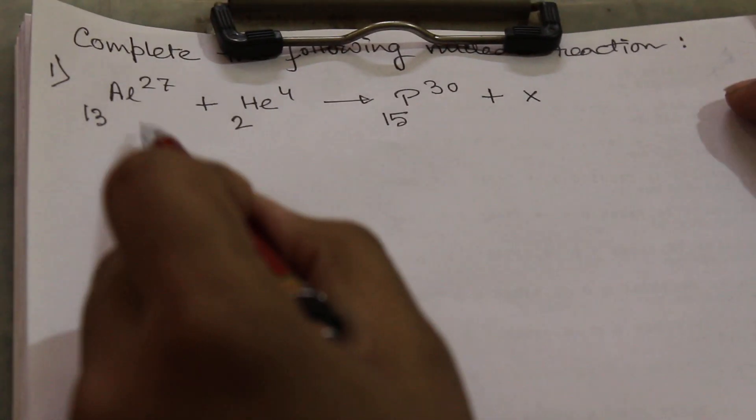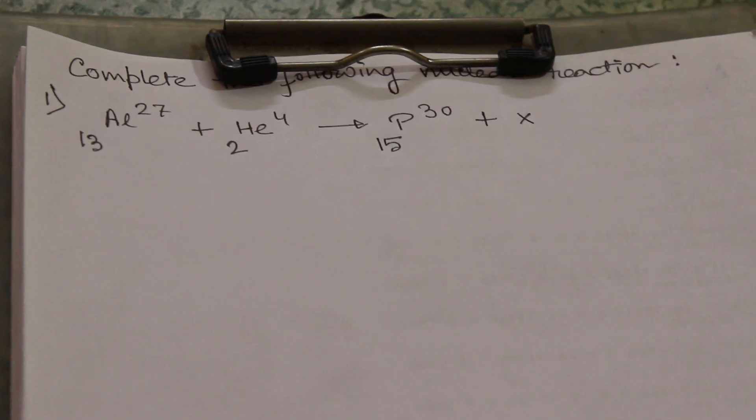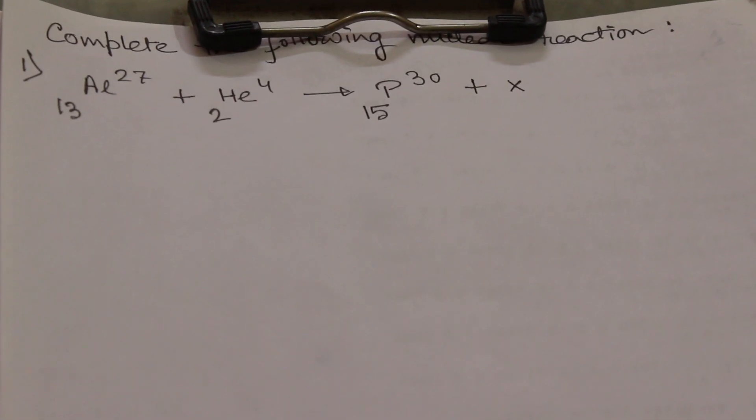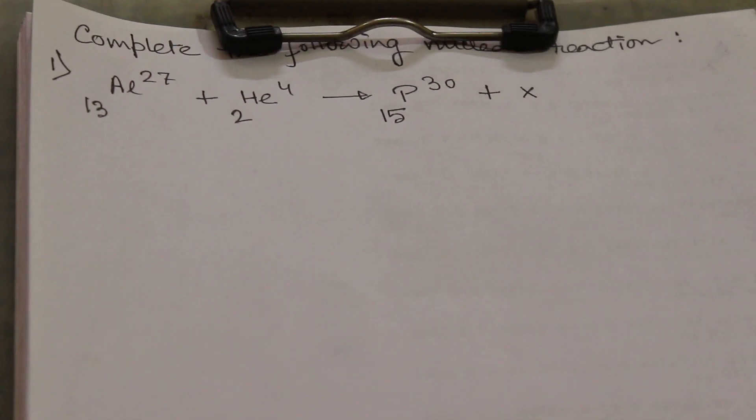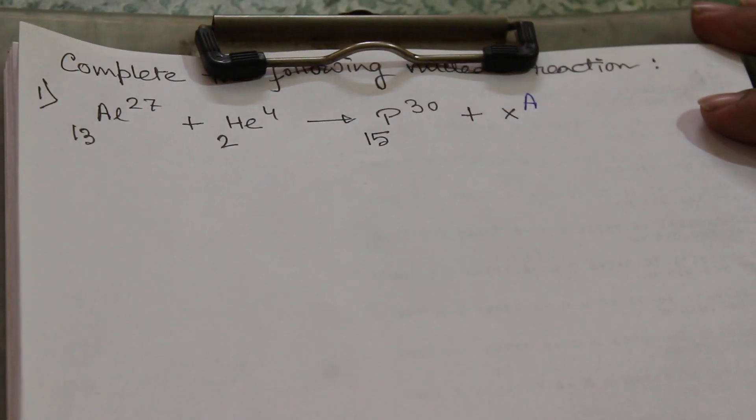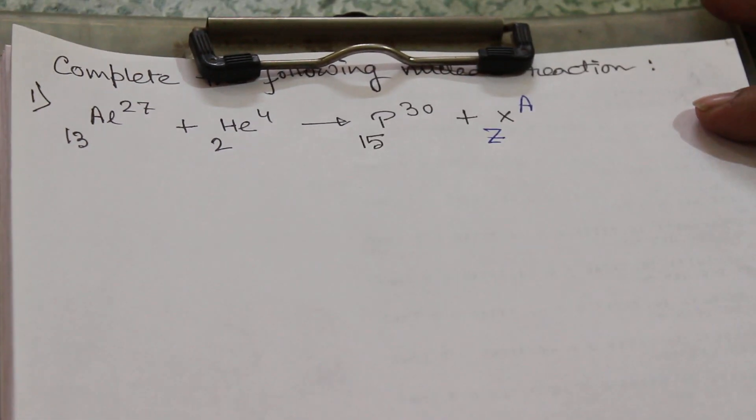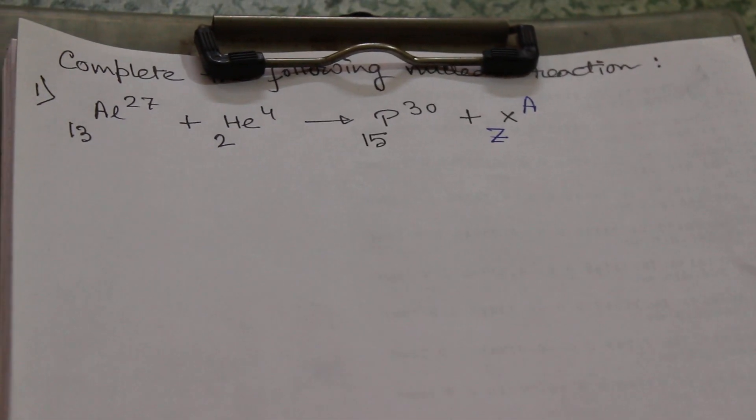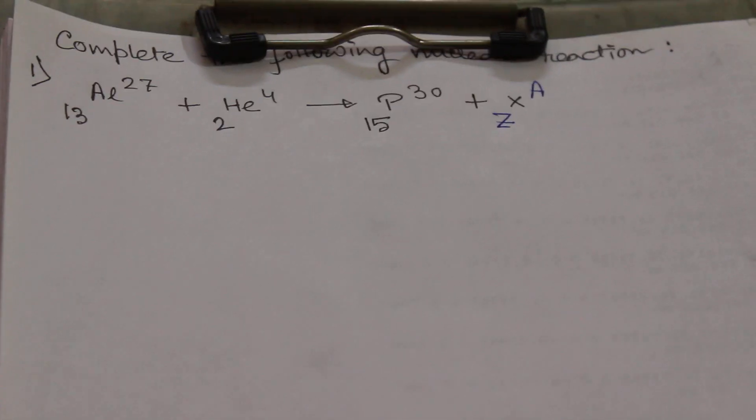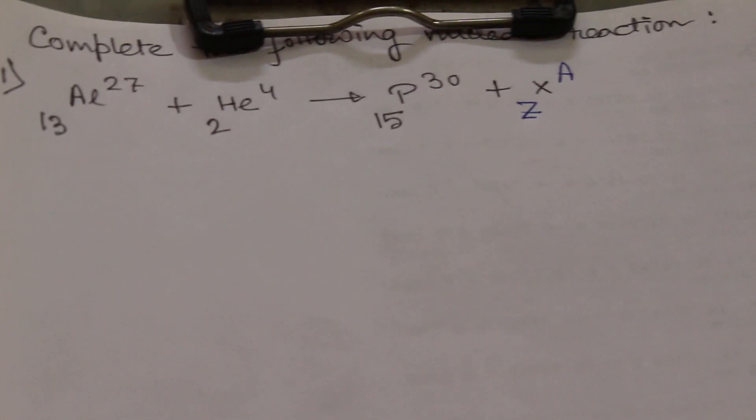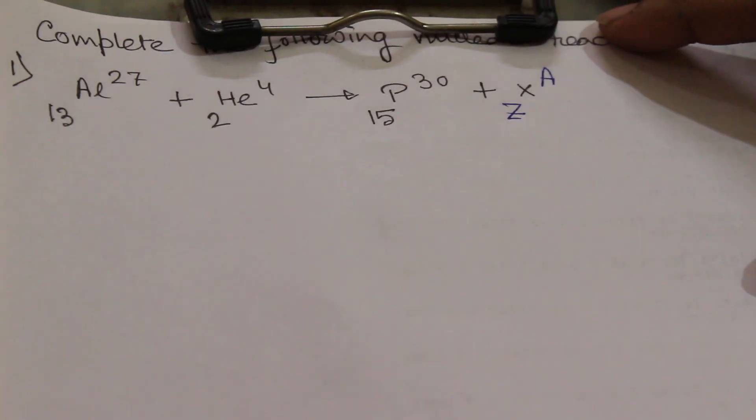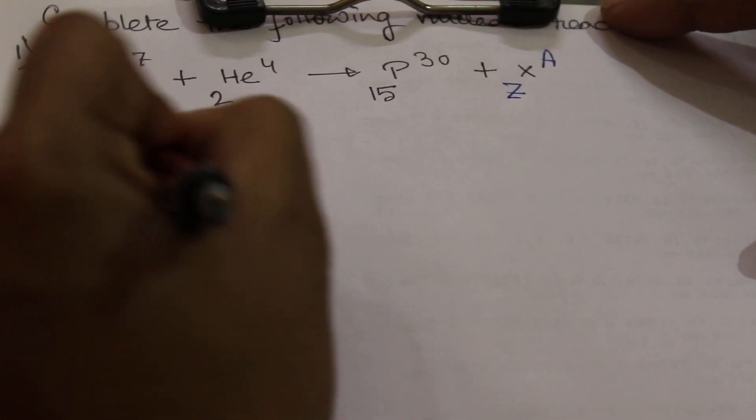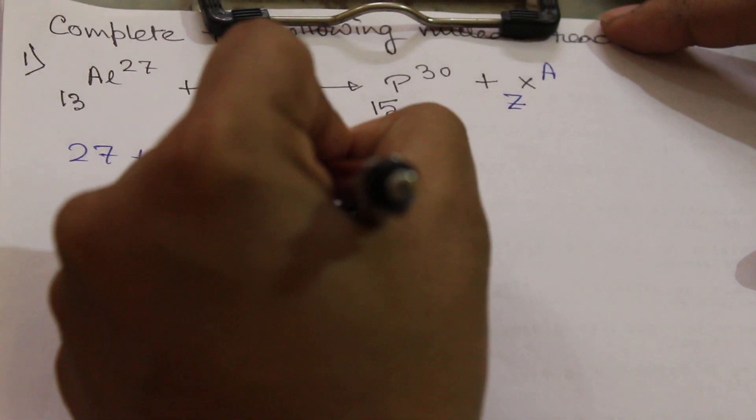This is our first equation: Al-27/30 plus He-4/2, from there we get P-30/50 and an element X. So we have to identify the element X. We have to write it as mass number A and atomic number Z. The thing is, in both sides LHS and RHS, the sum of mass number will be same and the sum of atomic number will also be same. So if we consider the mass number first, then 27 plus 4 equal to 30 plus A.